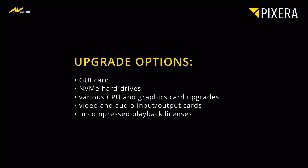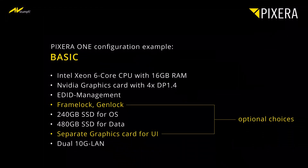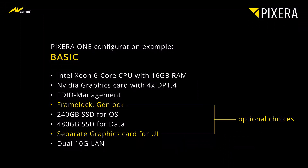Let's now look at three quick examples to show you what this a la carte idea could look like in real life as part of one of your project setups. If you have a tight budget for a project involving compressed Full HD or 4K content, then this configuration might work out really well for you. Some of the optional choices in this basic configuration example include frame lock, gen lock, and a separate graphics card for your UI.